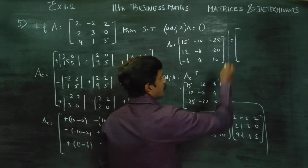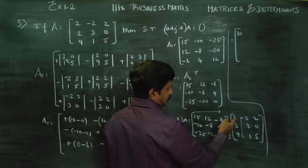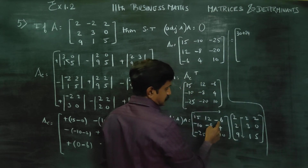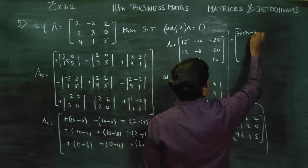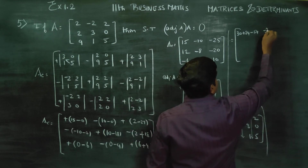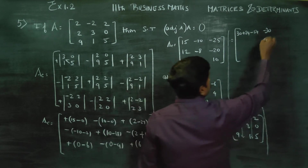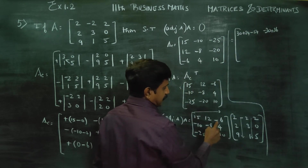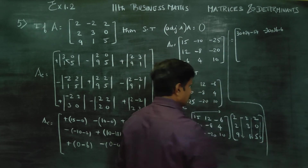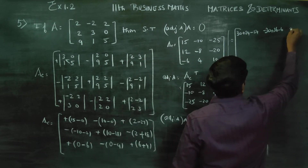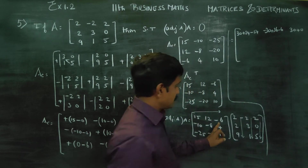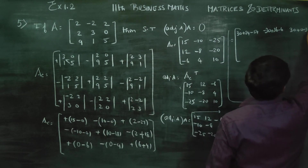Computing elements: 15×2 is 30. First element: 12 into 2 is 24. Plus into minus minus: 6×9 is 54, minus 54. Then 15 into minus 2 is minus 30. 12 into 3 is 36. Minus into plus minus, 6×1 is 6, minus 6. Last: 15 into 2 is 30. 12 into 0 is 0. Minus 6 into 5 is minus 30.